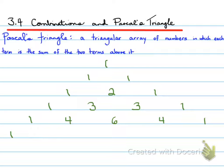We'll get 1 here. 1 plus 4 is 5. 4 plus 6 is 10. 6 plus 4 is 10. And 4 plus 1 is 5. And the last one is a 1. We can do 6. There's 1, 6, 15, 20, 15, 6, and 1.